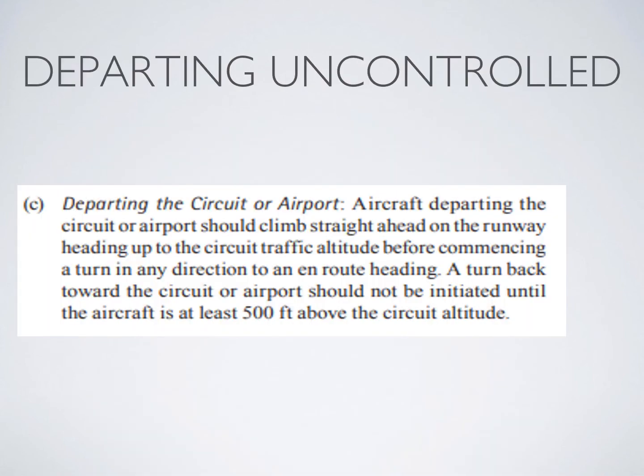When departing an uncontrolled airport, make sure you fly the runway heading until you're at least circuit altitude before commencing a turn in either direction on course. If you're going to make a turn back towards the circuit or towards the airport, you should not be doing this until you are 500 feet above circuit altitude. This only makes sense to ensure you are not conflicting with anyone in the circuit.